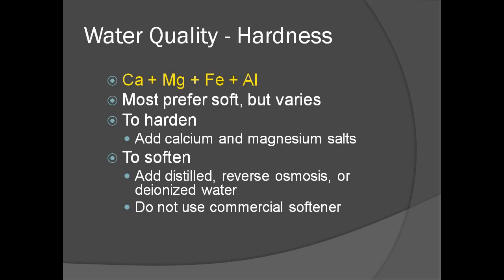Hardness refers to the amount of various mineral salts in the water, the most prevalent of which are calcium, magnesium, iron, and aluminum. The more salts in the water, the harder it is. The name comes from water's ability to make a soapy lather — the more minerals in the water, the harder it is to make a lather. Most amphibians prefer soft water, but this can vary by species. To harden the water, add calcium or magnesium salts. To soften it, add distilled, reverse osmosis, or deionized water, but do not use commercial water softeners.